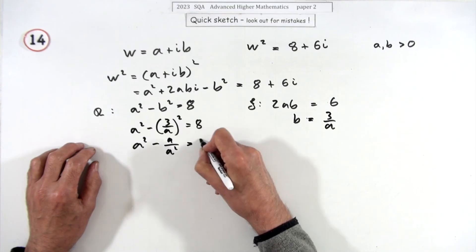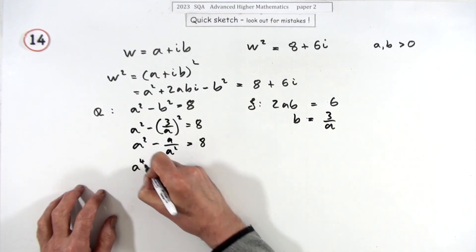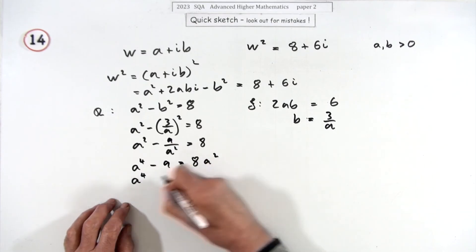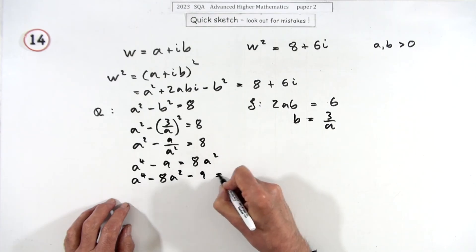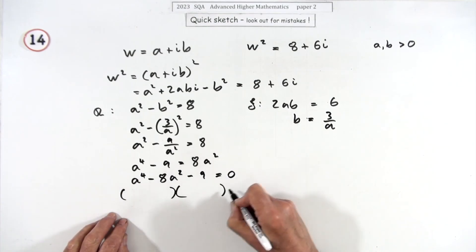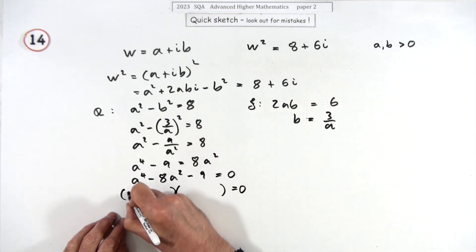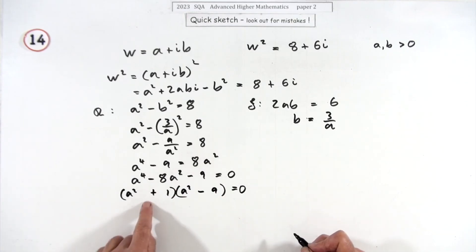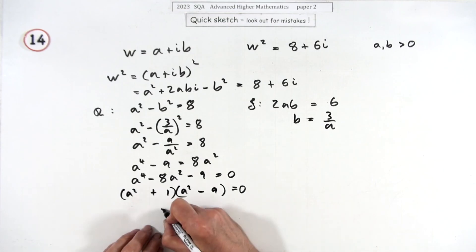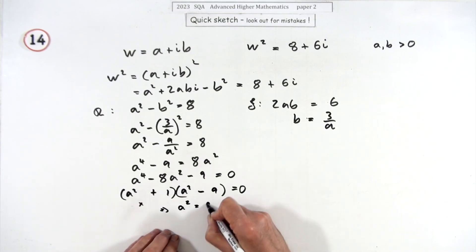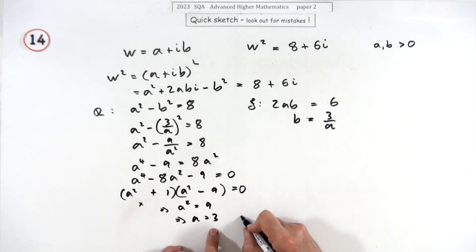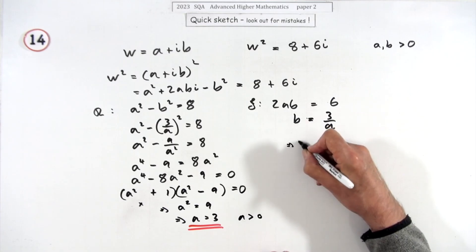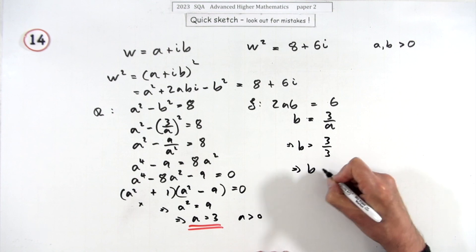Multiply through by a²: a⁴ minus 9 = 8a², giving the quadratic a⁴ minus 8a² minus 9 = 0. This factors as (a² minus 9)(a² plus 1) = 0. Since a must be real, a² plus 1 = 0 gives no real solutions, so a² = 9, meaning a = 3 (since a > 0). Then b = 3/a = 3/3 = 1.